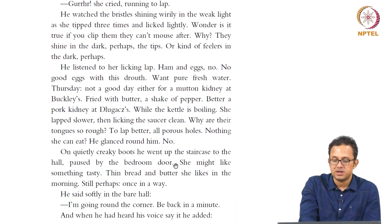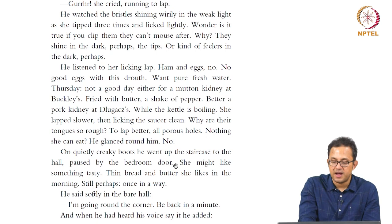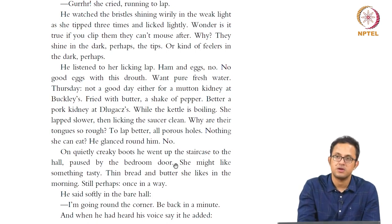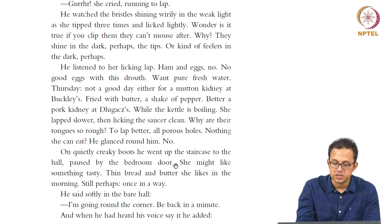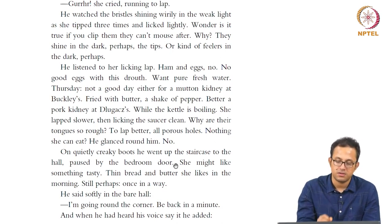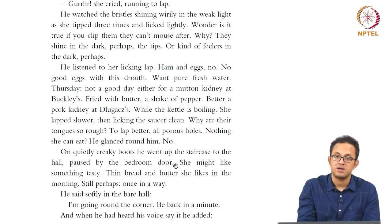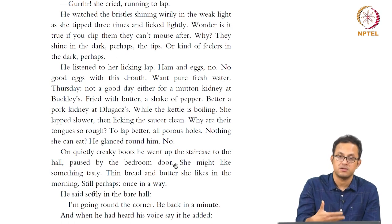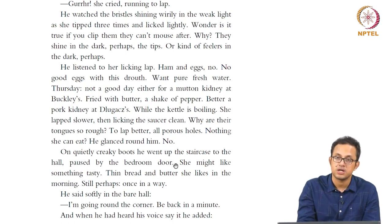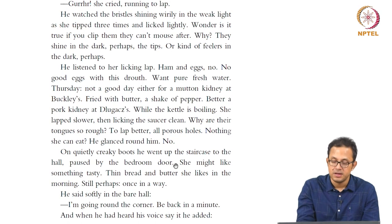On quietly creaky boots he went up the staircase to the hall and paused at the bedroom door. 'She might like something tasty. Thin bread and butter she likes in the morning.' He said softly in the bare hall, 'I am going around the corner, be back in a minute.' So he goes out to buy some kidney from a nearby meat shop. And again, the gritty realism of Dublin will be conveyed very soon — he is going to walk down Dublin streets to a Jewish butcher shop. We see the irony of the Jewish butcher shop in the sense that the butcher sells certain kinds of meat which are non-kosher, which he cannot himself consume, being a Jew.